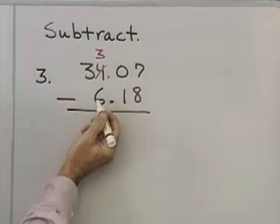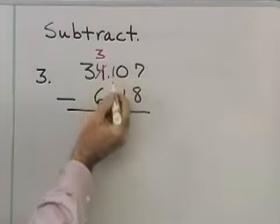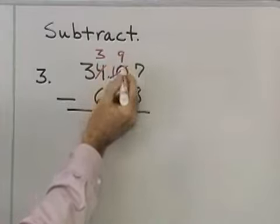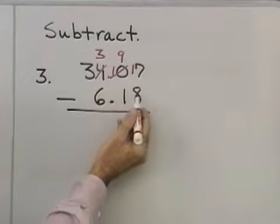What I'll have left is 3. When I borrow one of those, what I do is write it as 10 tenths. So, I'll make that a 10th. Now, I can borrow one of those tenths. So, I'll have 9 tenths. And, what I'll do with that is write it as 10 hundredths. So, I end up with 17 here.